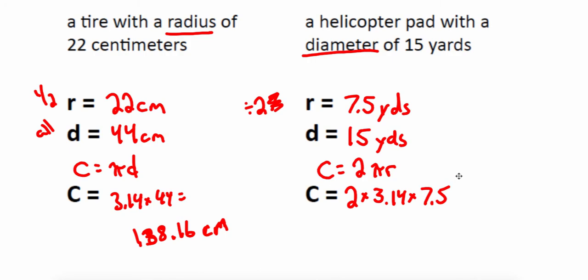No matter which formula you use, you're going to get the exact same answer, because 2 times the radius is the same thing as the diameter. In this case I get 47.1 yards. So circumference is either 2 times pi times the radius, or pi times the diameter, whichever measurement you choose to use.